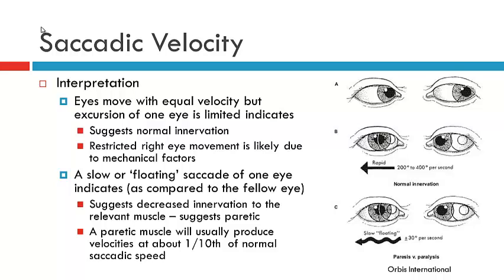So how do we interpret this? A brisk saccade, where you see relatively equal velocity between the right and left eye, indicates a mechanical restriction, and innervation is likely to be normal. On the other hand, if you have a slow and floating saccade, it's telling you that the saccade is being affected by innervation and that you're likely to have a paretic muscle and neurogenic palsy. It's noteworthy that the paretic muscle often will produce velocities at about one-tenth of the normal saccadic speed, so you should be able to notice that one eye is slower in velocity on examination.